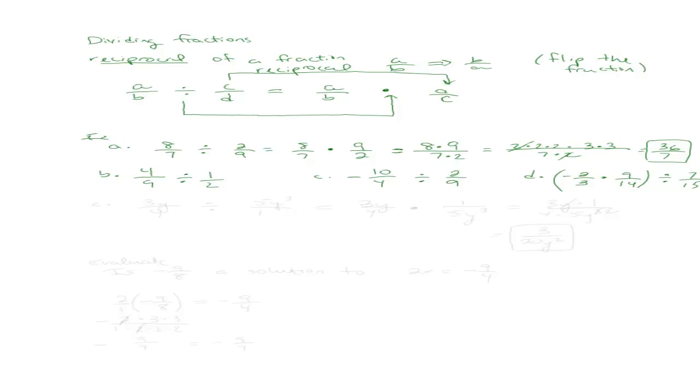And I will do one with variables for you. I will do 3y over 4 divided by 5y cubed. What I'll do is, I know that 5y cubed is the same thing as 5y cubed over 1, because I can write any whole number over 1. I'm going to use that to rewrite my fraction as 3y over 4 times, because my division sign becomes a multiplication sign, and my second fraction gets flipped.